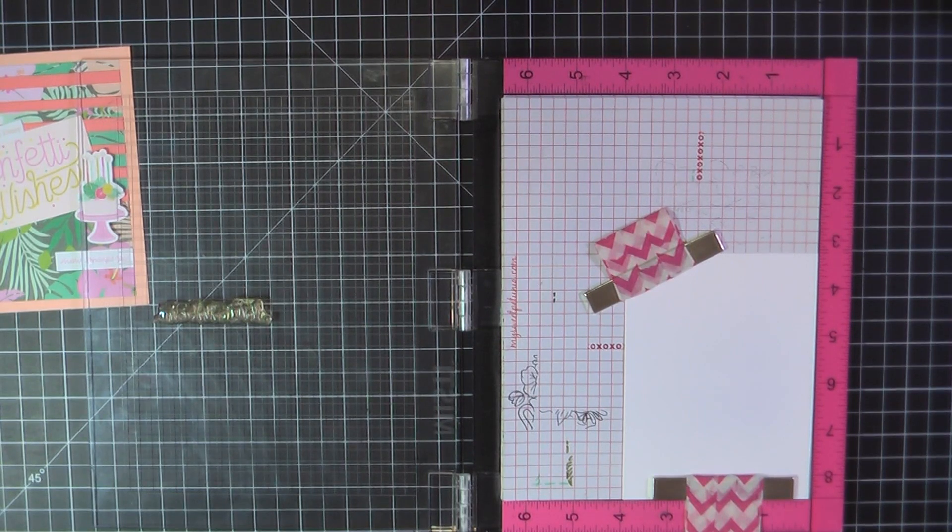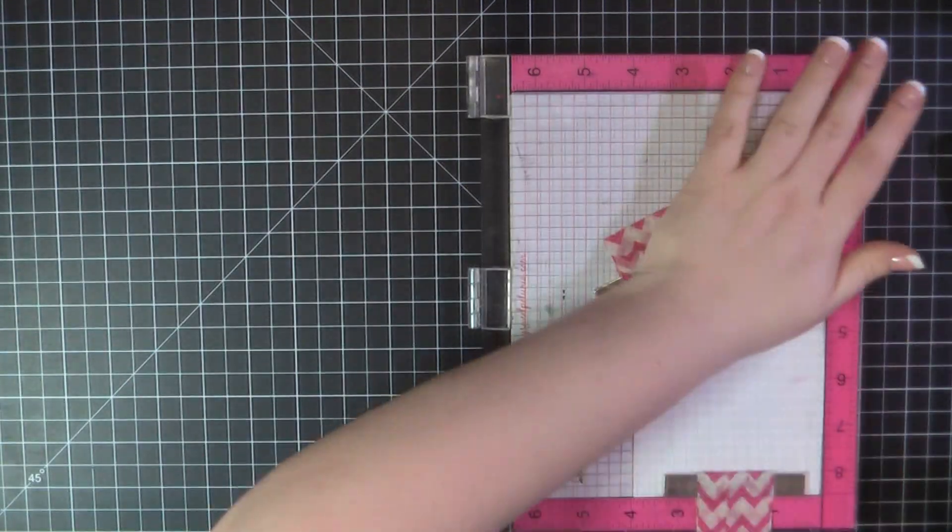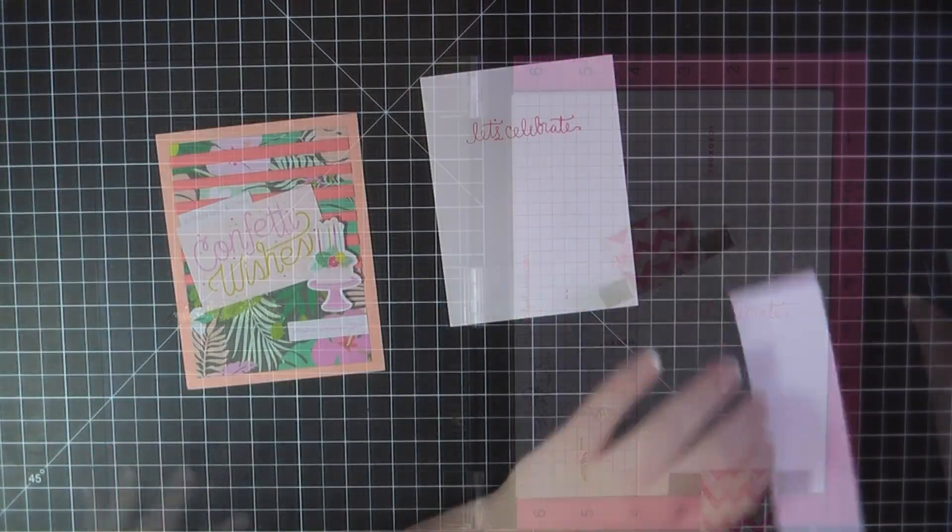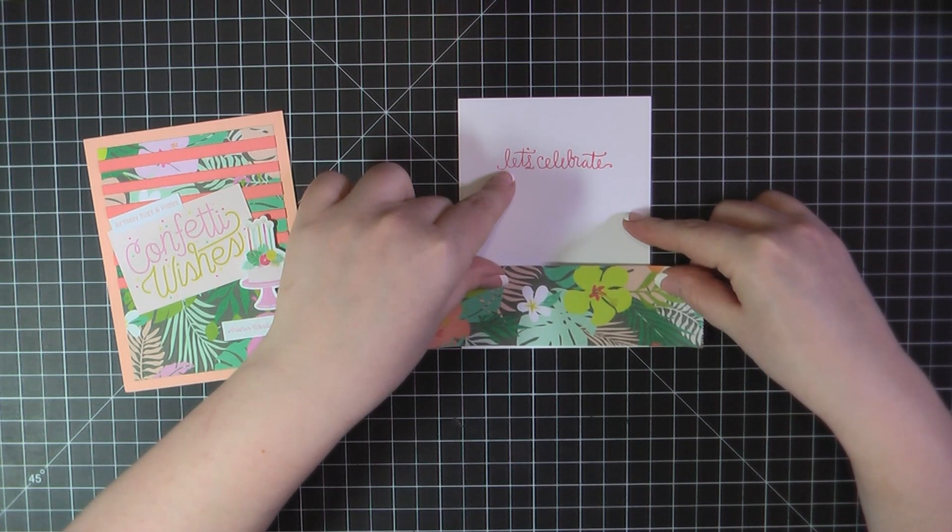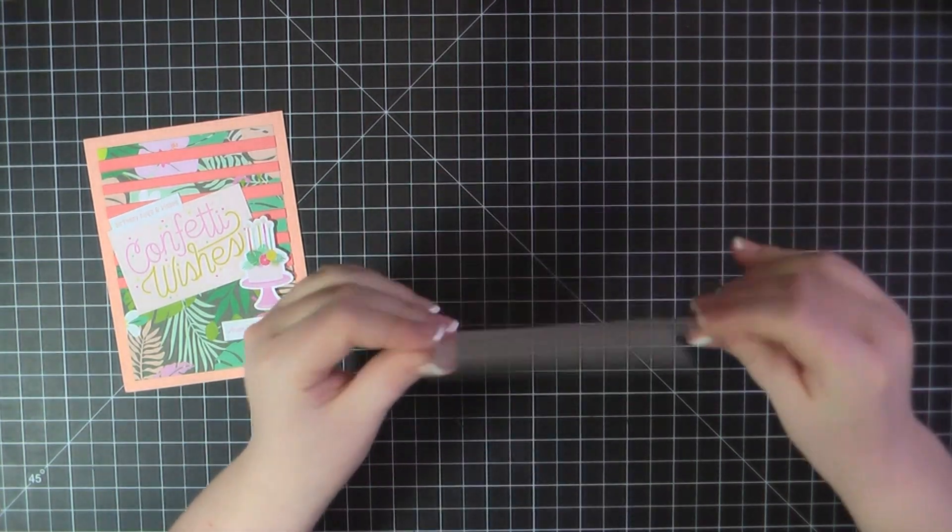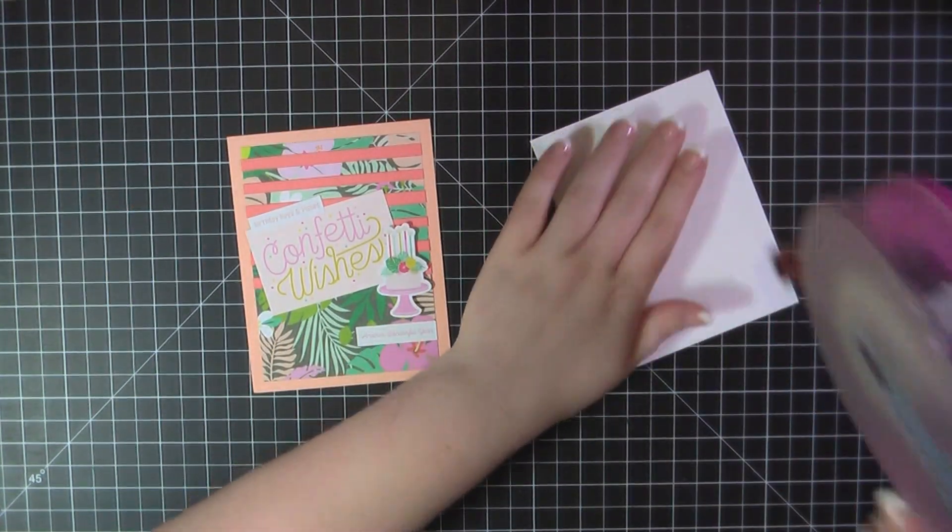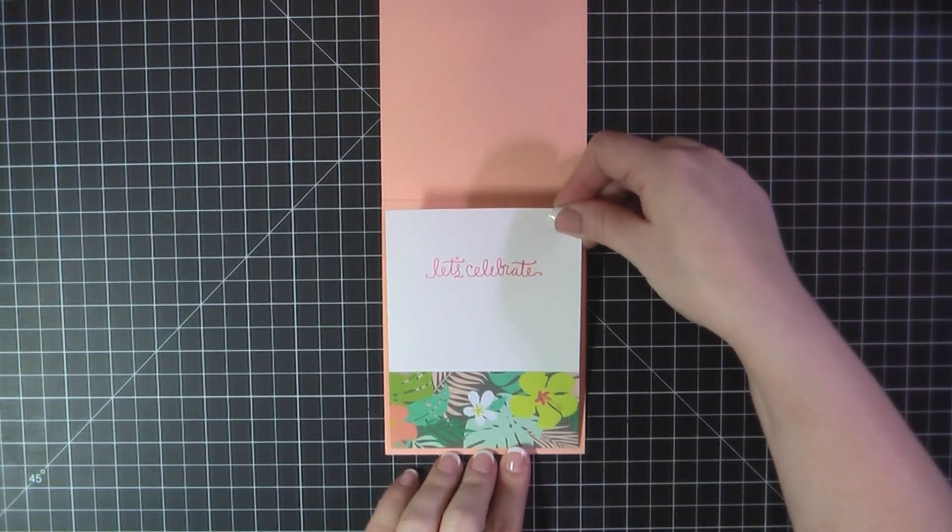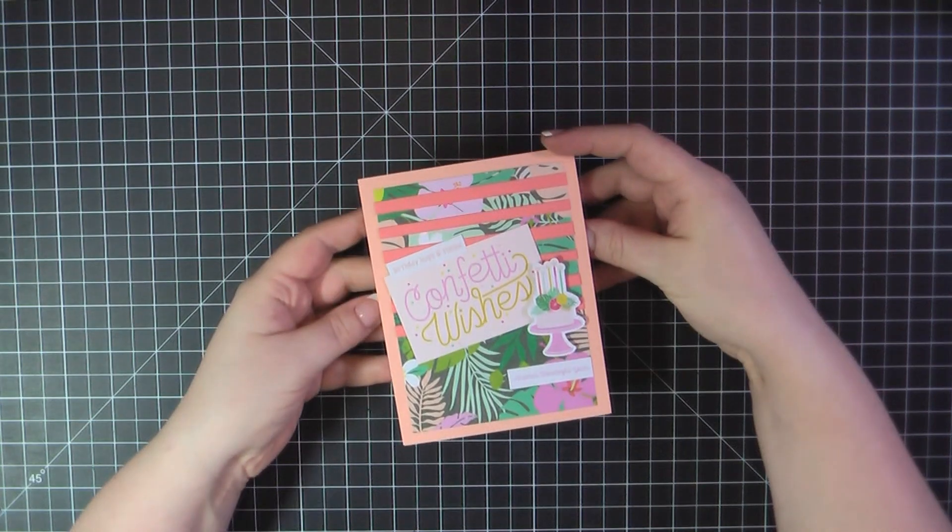For the inside, I'm again on my Neenah panel trimmed to 4 by 5 1⁄4. I'm going to stamp out that sentiment, Let's Celebrate, and I'll use my Lawn Fawn Peachy Keen ink for that. I've grabbed the rest of that pattern paper from the front, added some ATG to the back of that. I'll trim off the excess, add some ATG to the back of that, and then place it on the inside of my card base. And that will complete card number 5.